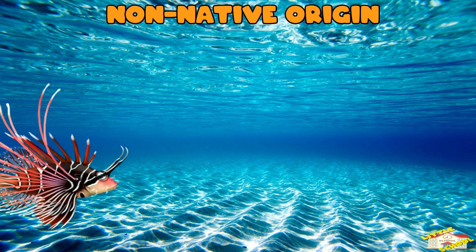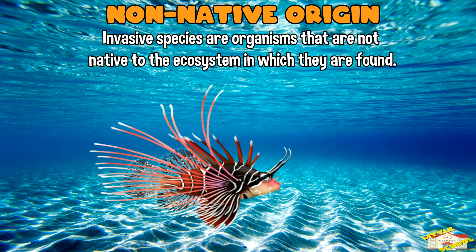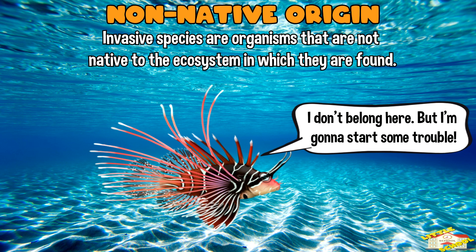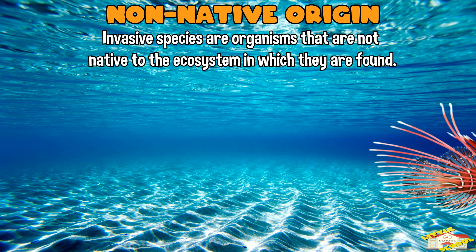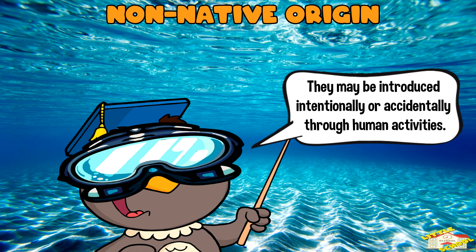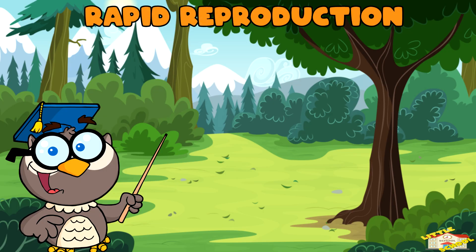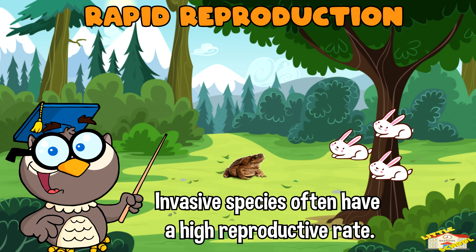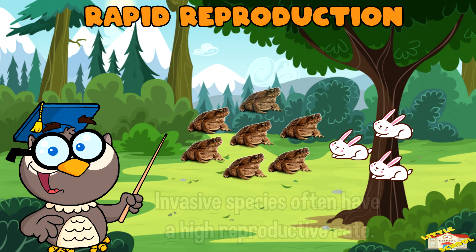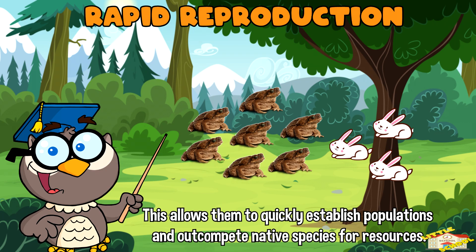Non-native origin: invasive species are organisms that are not native to the ecosystem in which they are found. They may be introduced unintentionally or accidentally through human activities. Rapid reproduction: invasive species often have a high reproductive rate, allowing them to quickly establish populations and outcompete native species for resources.